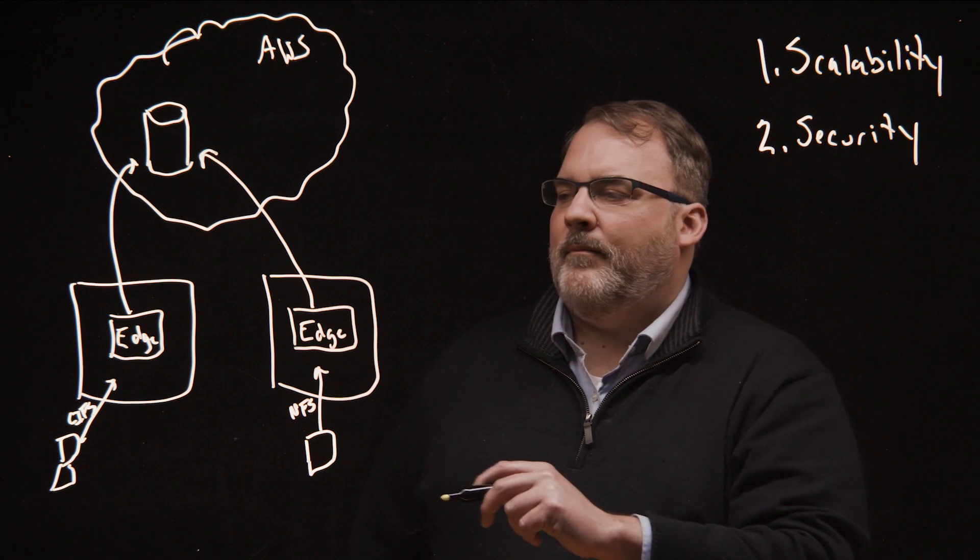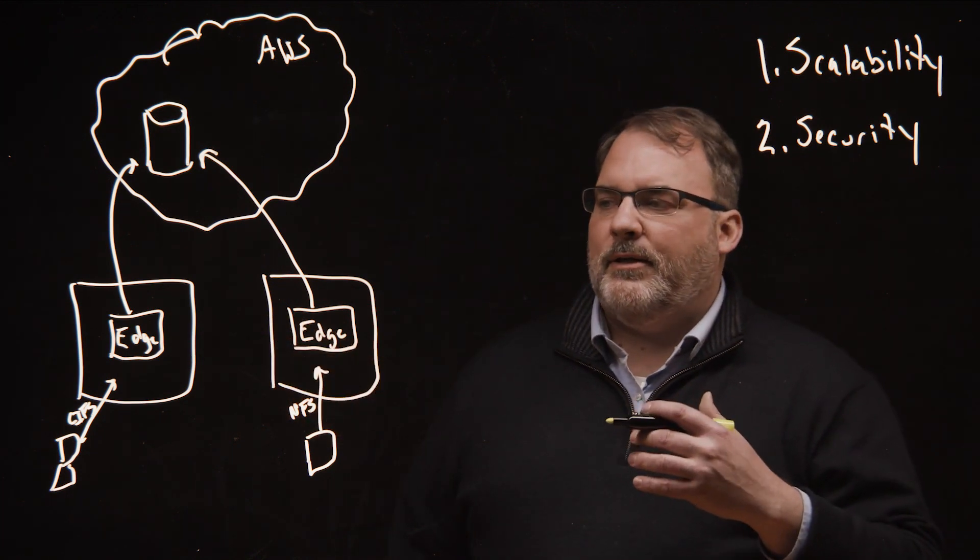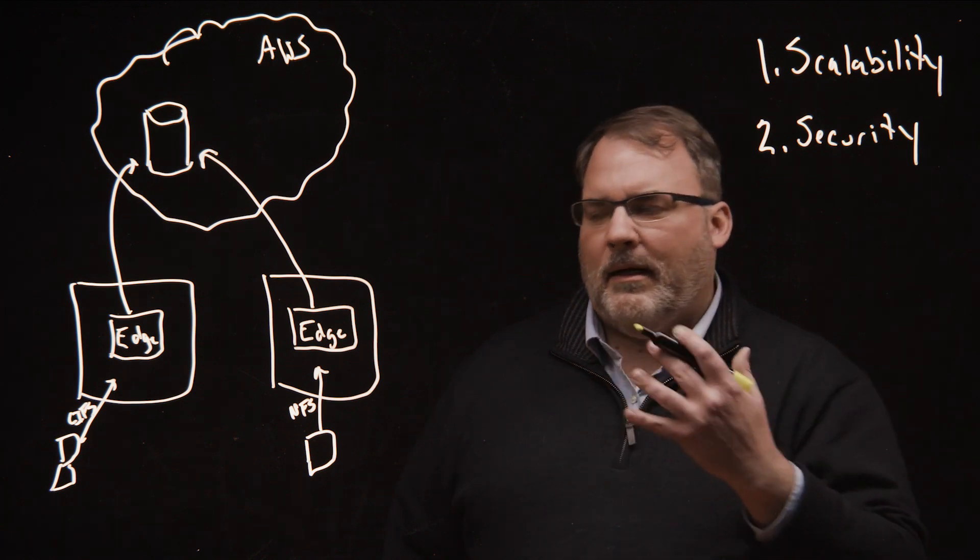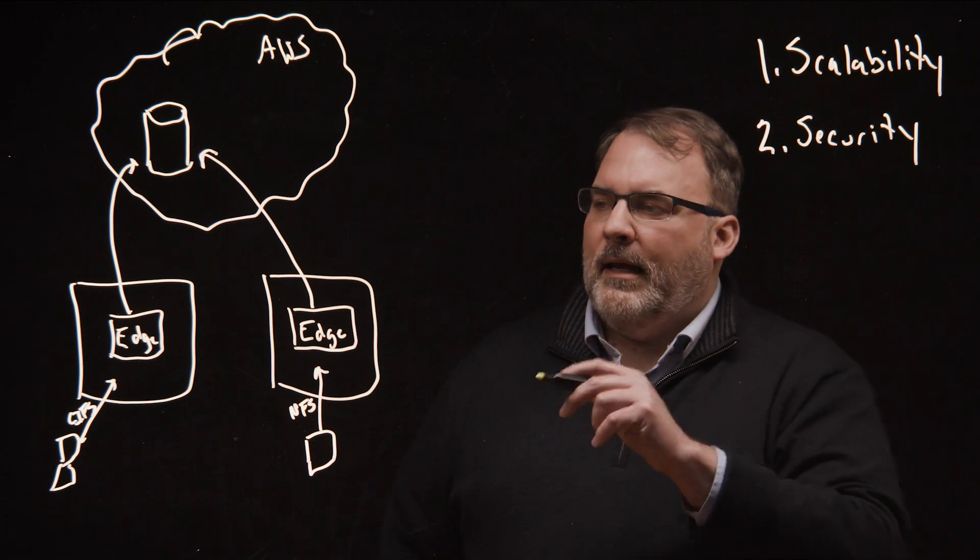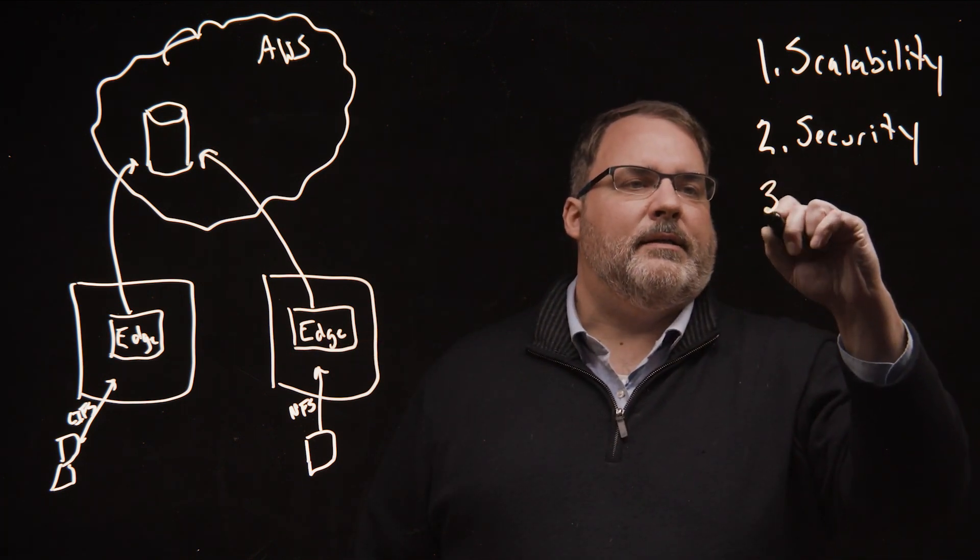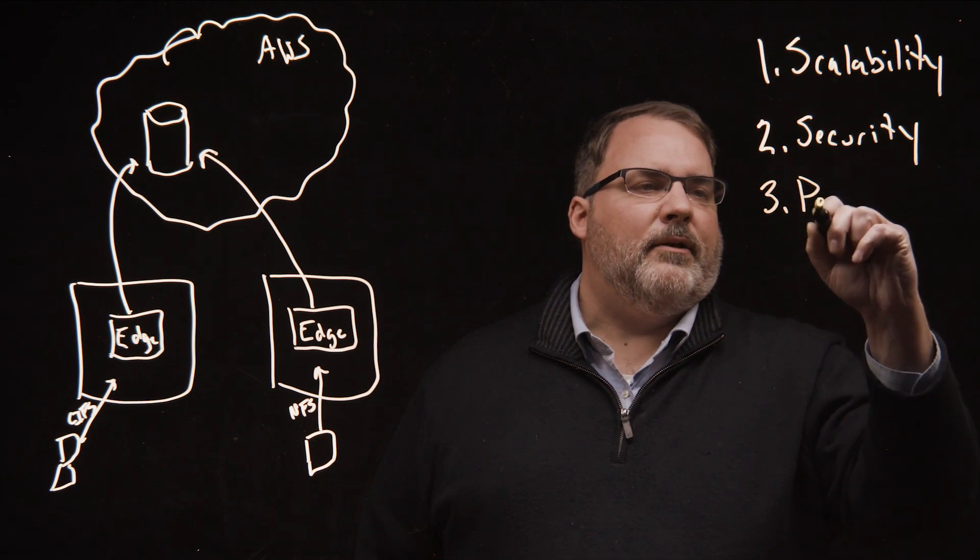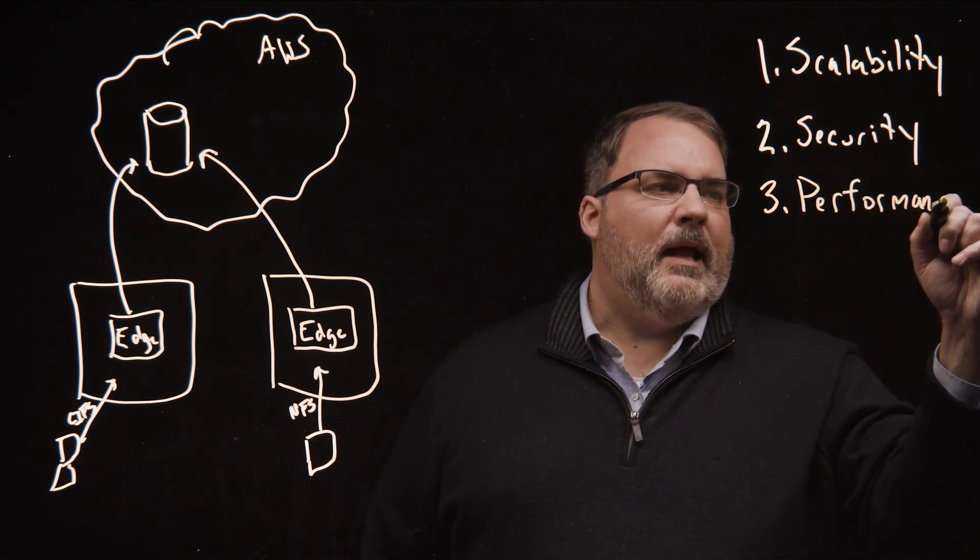But maybe I only need 10 terabytes on the edge. I can have an edge designed for that. What if I need a high performance edge that can serve lots of users? Maybe not a lot of data, but just lots of users. I can create an edge for that as well. That gives us the third piece about Nasuni, which is performance at the edge.